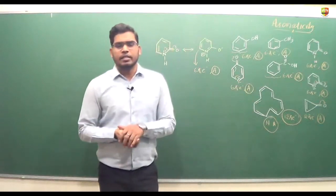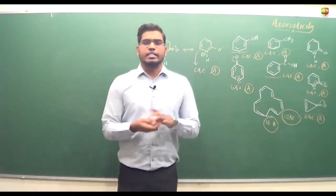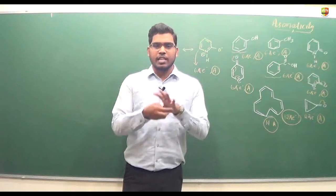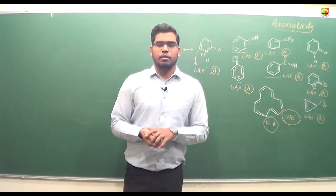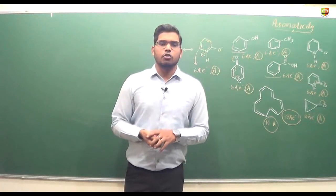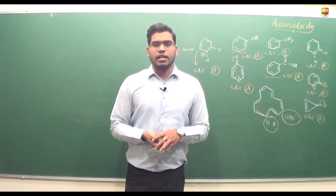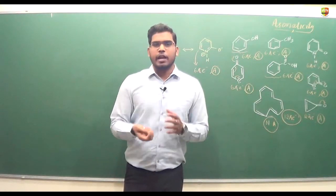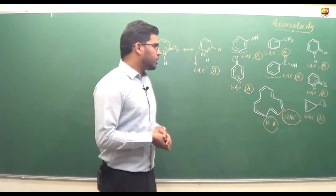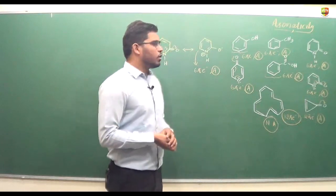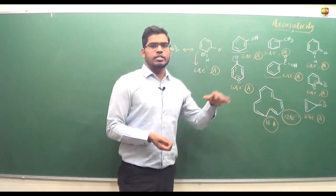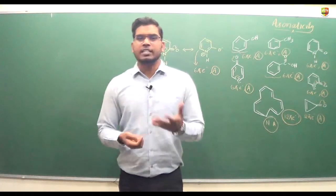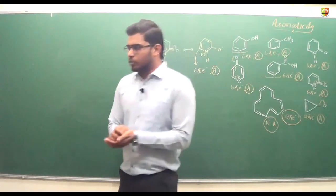These are the examples where we have only one cyclic compound — only one ring. Next, we are going to discuss what happens if you have multi-cyclic compounds — more than one ring present — and how we assign aromaticity, non-aromaticity, or anti-aromaticity in those molecules.